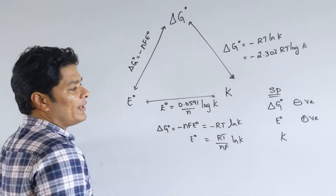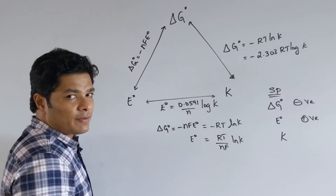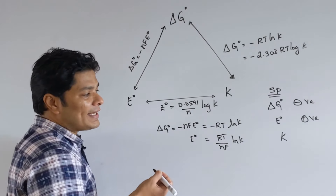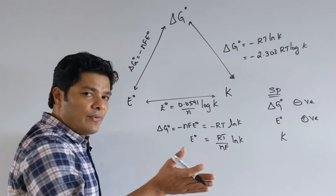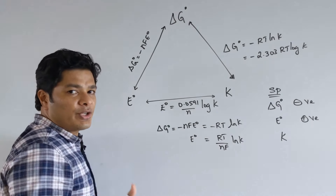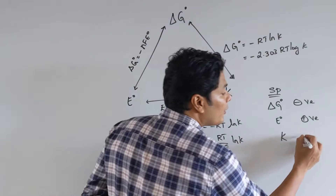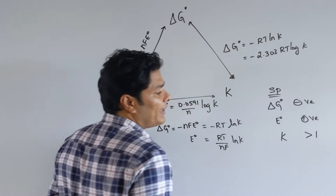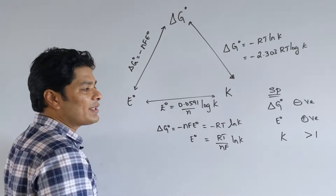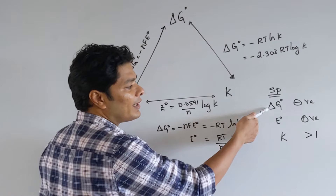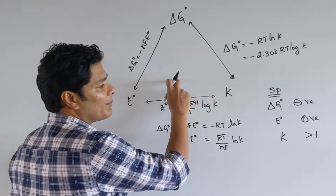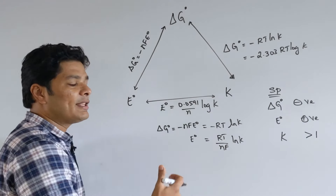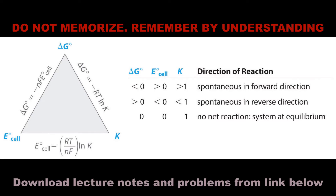For a spontaneous reaction: ΔG° is negative, E° is positive. K is always positive — it is between 0 and infinity. A K value greater than 1 is spontaneous. A K value less than 1 means E° is negative and ΔG is positive. These are the conditions for spontaneity — remember this and be able to write them out quickly. You will be able to do problems faster in your exam.